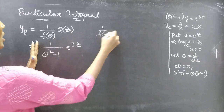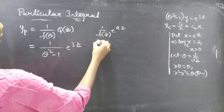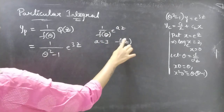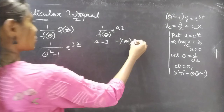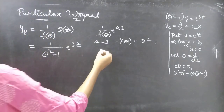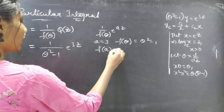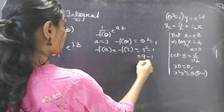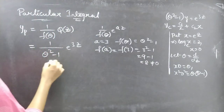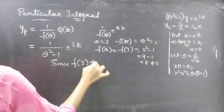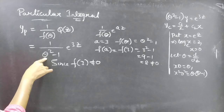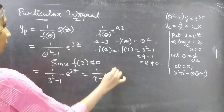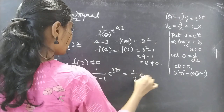Comparing e³ᶻ with e^(az), we get a = 3. We find f(a) = f(3): replace θ by 3 to get 3² − 1 = 9 − 1 = 8, which is non-zero. Since f(3) ≠ 0, we replace θ by 3 to get yp = (1/(3² − 1)) · e³ᶻ = (1/(9−1)) · e³ᶻ = (1/8)e³ᶻ.